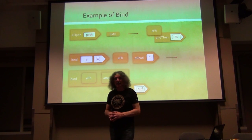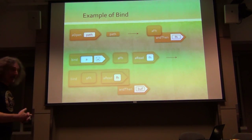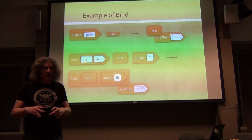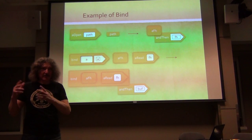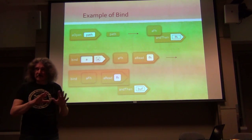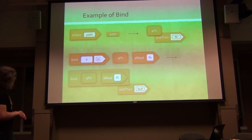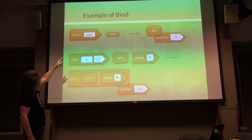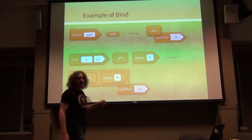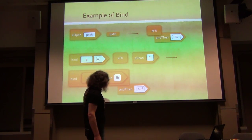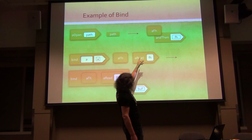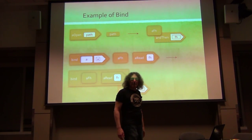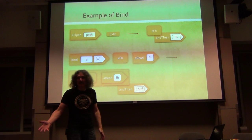Here's a concrete example - best to understand it on a concrete example. We have this problem: open a file, read from the file, then parse the contents of the buffer. So we have a monadic function async open, which takes a path and returns an async object. This async object encapsulates a file handle. And it has an ANDTHEN method that takes a continuation accepting a file handle.